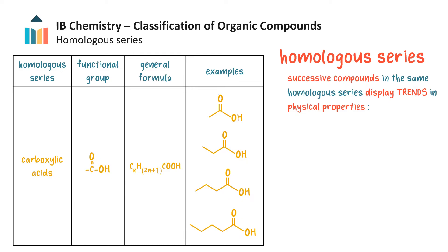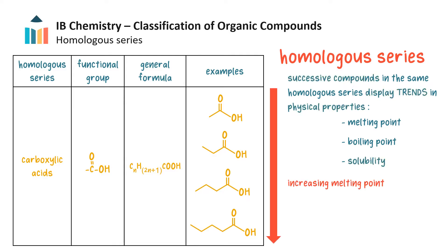Although compounds in a homologous series have similar chemical reactivities, they usually show trends in physical properties such as melting point, boiling point, and solubility. For example, in the carboxylic acid homologous series and many other homologous series, with increasing carbon chain length there is increasing melting point, increasing boiling point, and decreasing solubility in water.